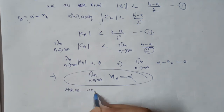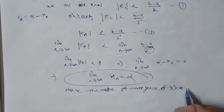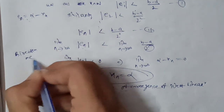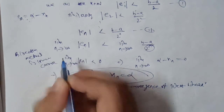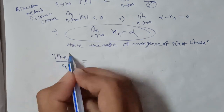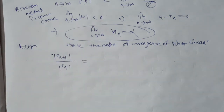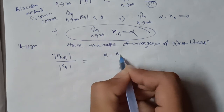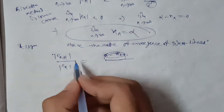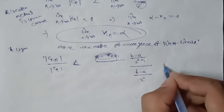Hence the rate of convergence of the bisection method is linear; the bisection method is linearly convergent. The asymptotic error is given by eₙ₊₁ divided by eₙ, which equals |α - xₙ₊₁| divided by the bound. We correct the condition: less than or equal to (b - a) / 2ⁿ⁺¹ divided by (b - a) / 2ⁿ.